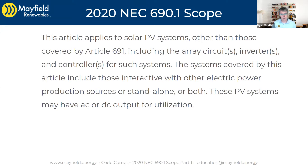There is a reference to 691 there. If you're doing a larger-scale system — five megawatts or above — 691 applies, and it references back to 690 a fair amount. But that's where you would go if you're doing large-scale systems.